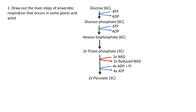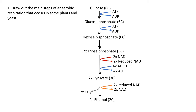After pyruvate, pyruvate is decarboxylated and reduced, and that produces ethanol. Importantly, the NAD produced from that reaction goes back to be involved in the oxidation of triose phosphate, which is really important because it allows the continuation of ATP to be produced.